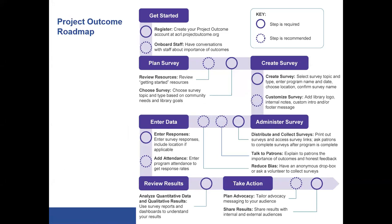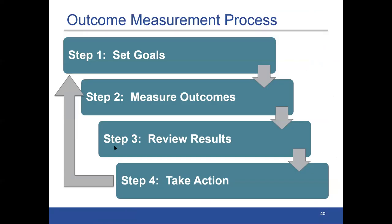The libraries we see being most successful adapting the outcome measurement model just start with one survey. Pick one small survey, see how it goes, administer it. If you have concerns about staff buy-in, have one staff champion for the administration of one survey. Get the data back, see how that looks, think about how you can make improvement, and then do it again. When we have our outcome measurement process that we recommend, we talk about setting goals, measuring your outcomes, reviewing results, taking action, and then starting over. Maybe the first round your goal is to just get some first-round staff buy-in, figure out how to improve, and build from there. All of these resources are available on our resource page online.